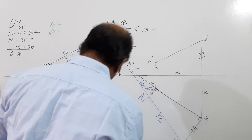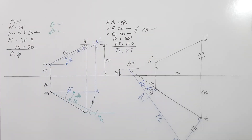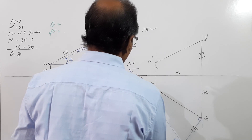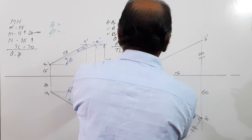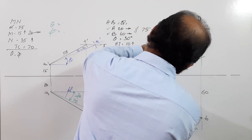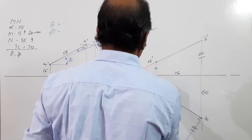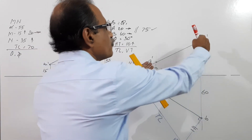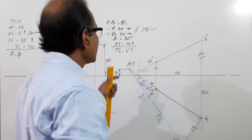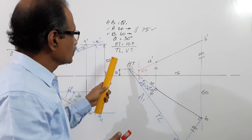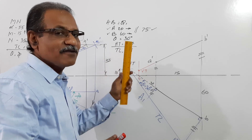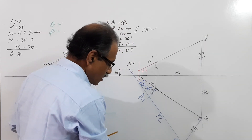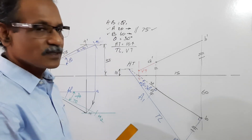You are asked to draw the projections — now you have drawn the projection. You are asked to find out the true length and VT. A1B1 is already the true length. VT you can easily find out by extending the elevation. Extend the plan to get small V, draw a vertical through small V, and extend the elevation — this point is VT. If phi is also asked, you can go for a trapezoidal construction here to get VT as well as phi. But in this question only true length and VT are asked. Simple question. Thank you.